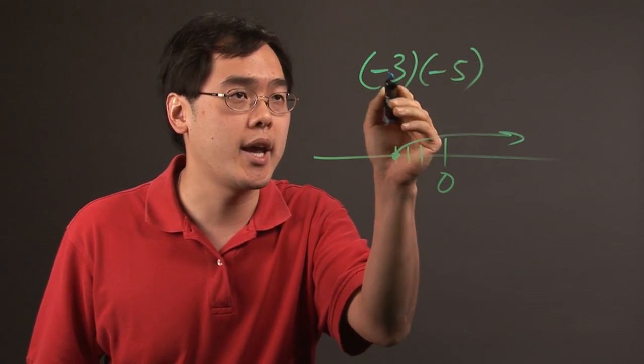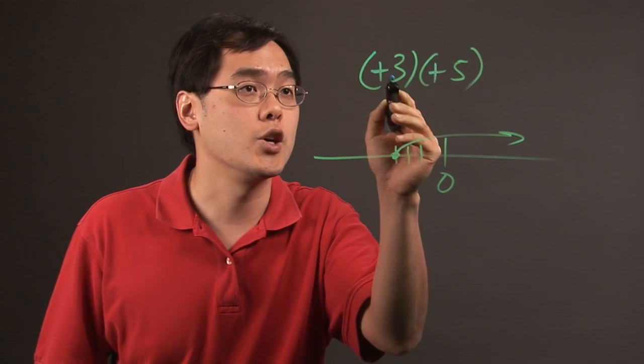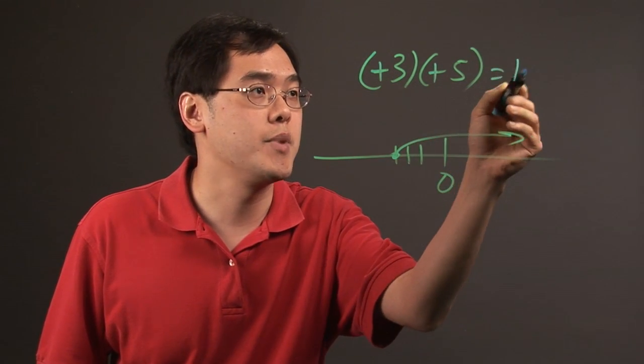So in this case, negative times a negative is going to give you positive, which makes sense because you're now going right. And so negative 3 times negative 5 is going to be positive 15.